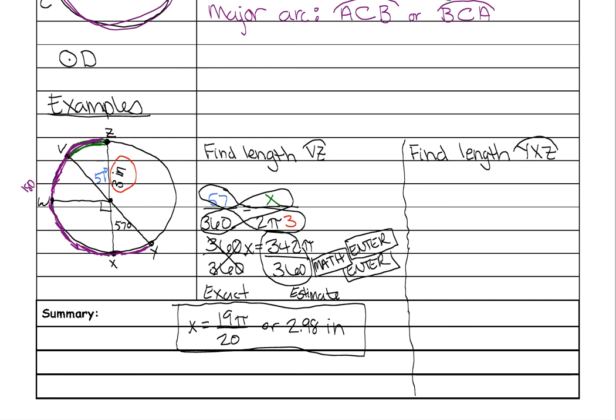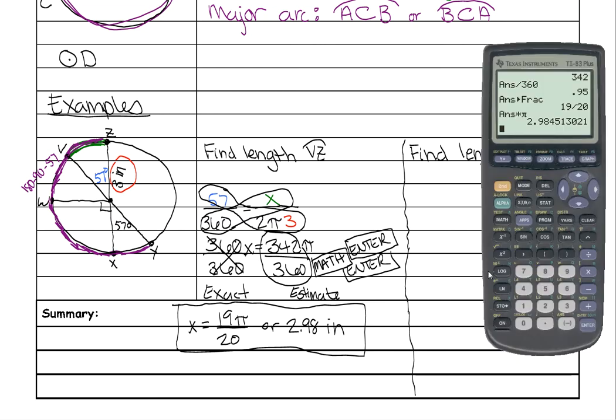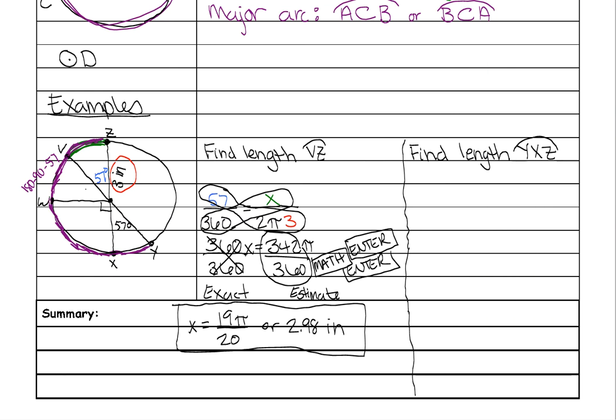So to figure out this one, you would do 180 minus the 90 that's there and minus the 57 to give you whatever those degrees are. So 180 minus 90 minus 57 is 33 degrees.